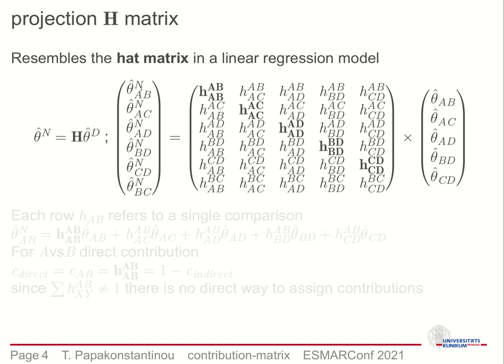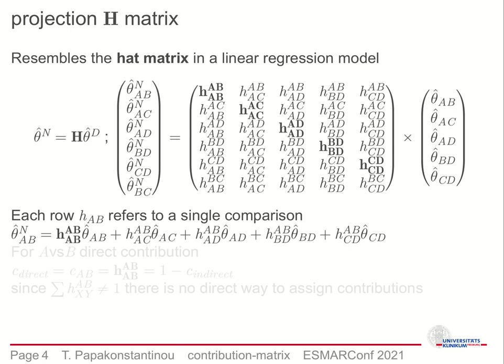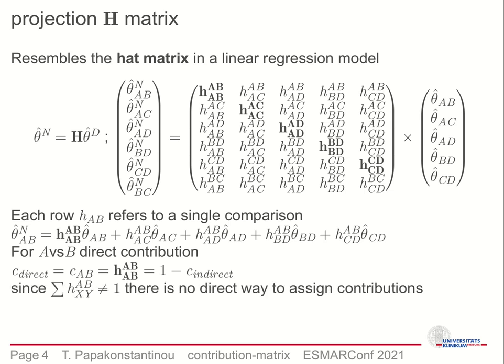Each row of the H matrix refers to a single network effect and columns refer to direct comparisons. For the A-B network comparison, the row of interest is the first one. The task now is to turn the elements of the H matrix into contributions. The contribution of studies having directly compared A versus B — the direct contribution — is by definition equal to the respective element of the H depicted here in bold font. This excludes the solution of simply normalizing the H elements, given that the sum of the elements of a row do not generally add up to one.